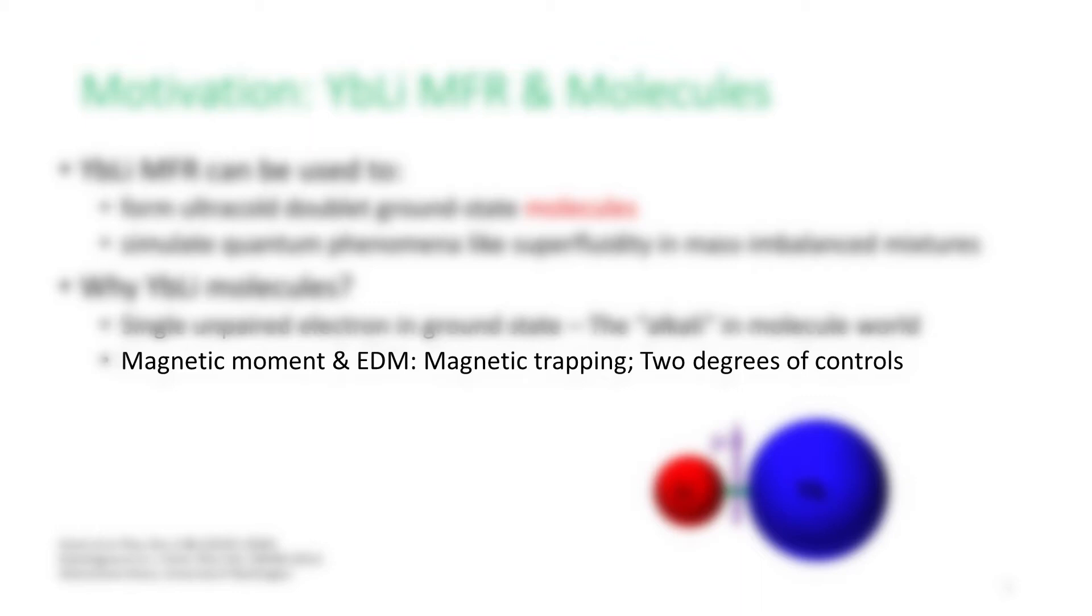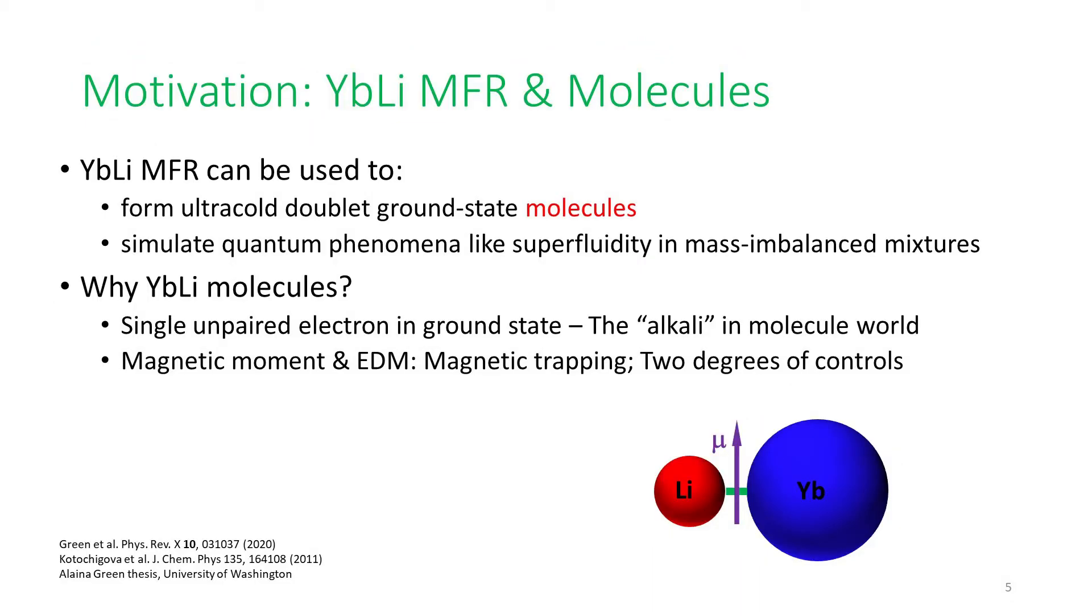This unpaired electron also leads to the ground state molecule having a magnetic moment of one Bohr magneton, which allows for the magnetic trapping of this molecule. Due to the heteronuclear configuration of the molecule, it has a natural electric dipole moment as well. Along with the magnetic moment, these two degrees of controls open up a vast array of opportunities for research. For more details, please refer to the recent thesis from our lab, authored by Dr. Alaina Green.